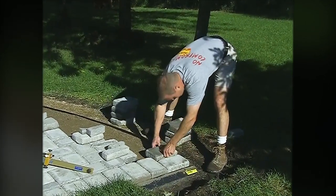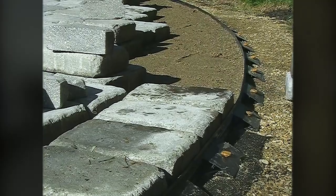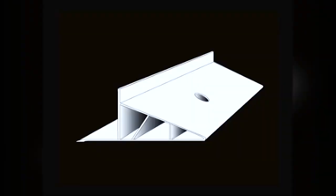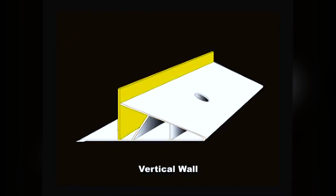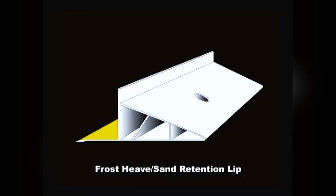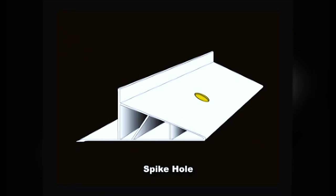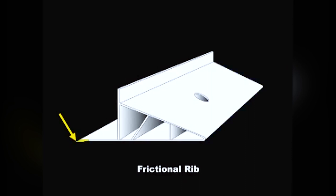Pave Edge was the first patented edge restraint designed by a contractor for exclusive use with pavers. It has a reinforced triangular hollow core profile — this engineered structural shape ensures that the vertical wall stays perpendicular to the pavers. The patented frost heave sand retention lip contains the bedding sand and allows the edging to move with the pavement as a single system during frost heave cycles. Spike holes are evenly spaced every 12 inches on back support, and the patented frictional rib on the underside of the lip gives additional lateral resistance by biting into the base.